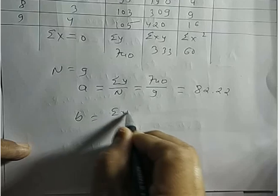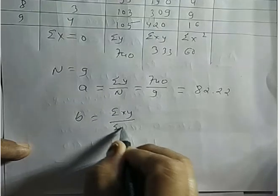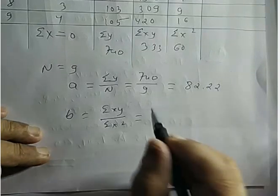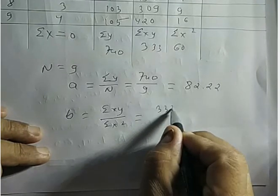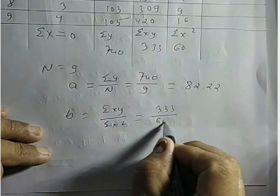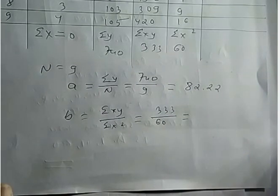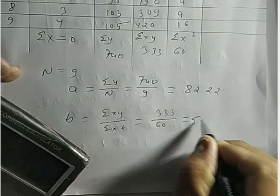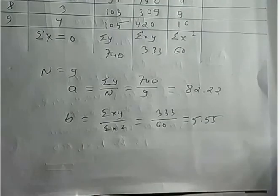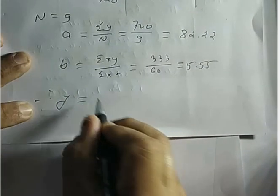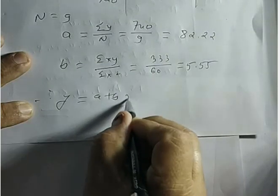B is equal to sigma XY divided by sigma X squared. Sigma XY equals 333. B equals 5.55. So the equation is Y equals A plus BX.